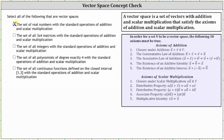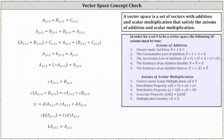Next we have the set of all two by three matrices with the standard operations of addition and scalar multiplication. If we add matrix A and matrix B, which are both two by three matrices, we get another two by three matrix C by adding the corresponding elements — we have closure under addition. Matrix addition is also commutative and associative. There is a zero two by three matrix such that matrix A plus the zero matrix equals matrix A, verifying the additive identity. For every matrix A there is an opposite matrix where the elements have the opposite sign, such that their sum is the two by three zero matrix.